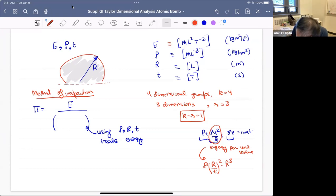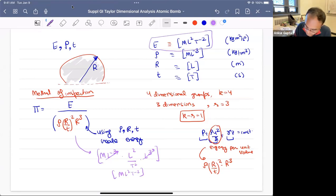So essentially, what we get is ρ(r/t)²r³. And we can check whether this does actually satisfy our dimensional balance. So the dimensions of this is mass length⁻³ times length² by t² times length³. This cancels out and you get ml²t⁻², which is the dimensions of energy, ml²t⁻².